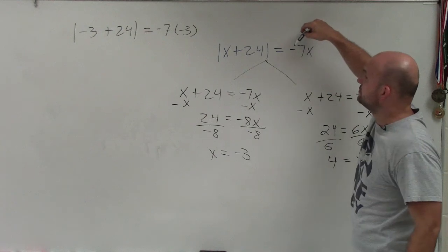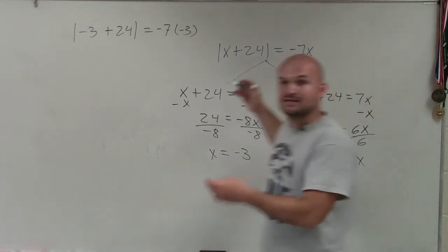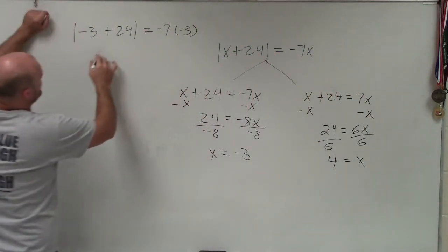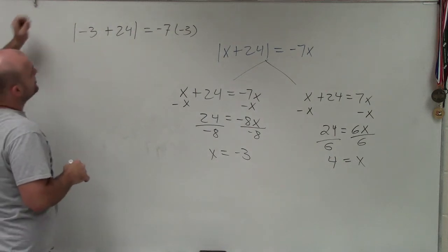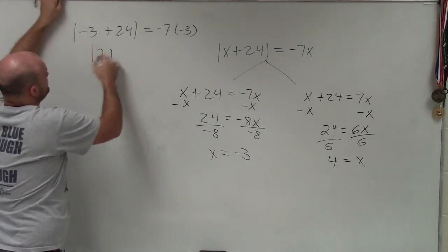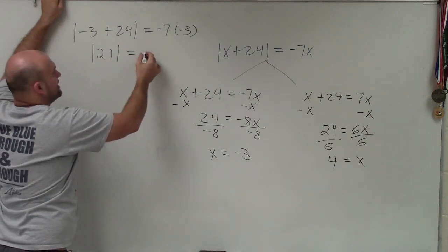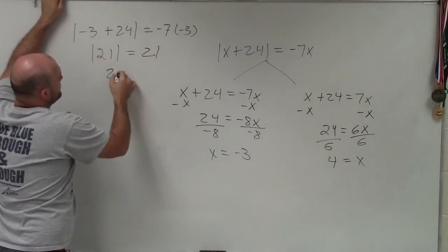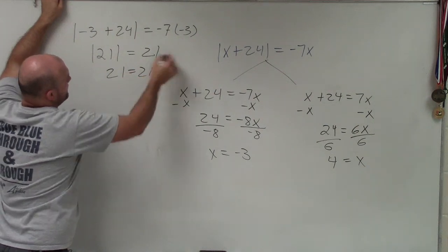So when I do this, I have negative 3 plus 24 is going to be positive 21, which is equal to negative 7 times negative 3 is positive 21. Therefore, 21 is equal to 21. Very good.